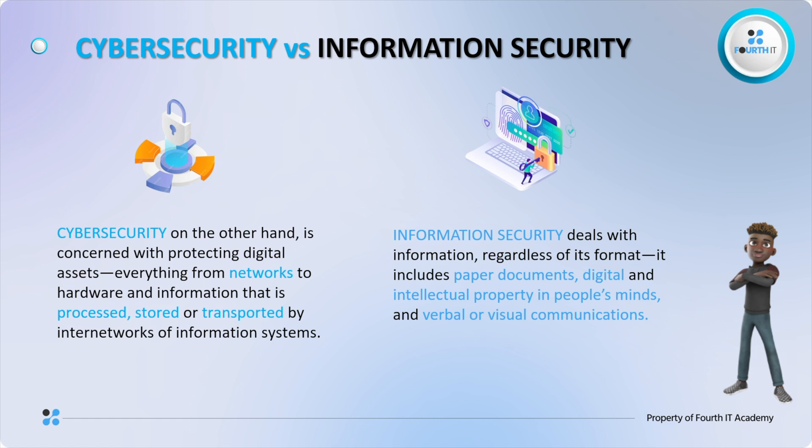There are also differences you want to take notice of. Information security is a broader theme that encompasses the protection of all forms of information, including digital and non-digital. Information security includes measures used to protect data in various states — whether the data is at rest, the data is being transferred, or the data is in use. We will talk about data at rest, data in transit, and data in use when we get to encryption.